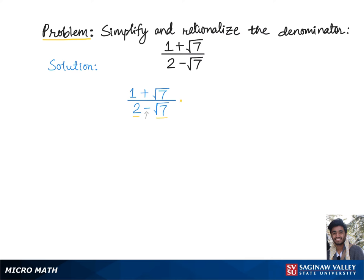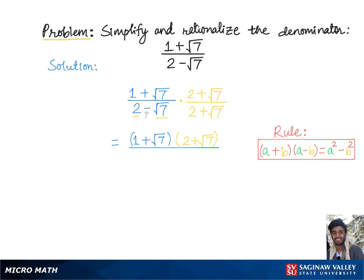So basically we will multiply the top and bottom of the fraction by (2 + √7), which gives us (1 + √7)(2 + √7) in the numerator. The conjugates in the denominator get multiplied using the difference of squares rule.